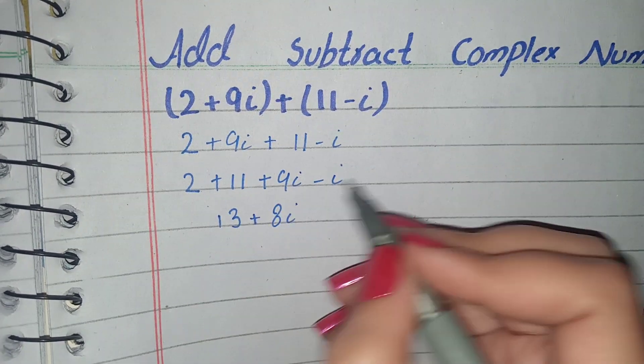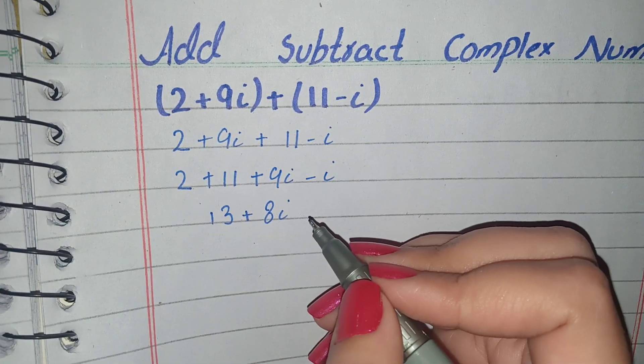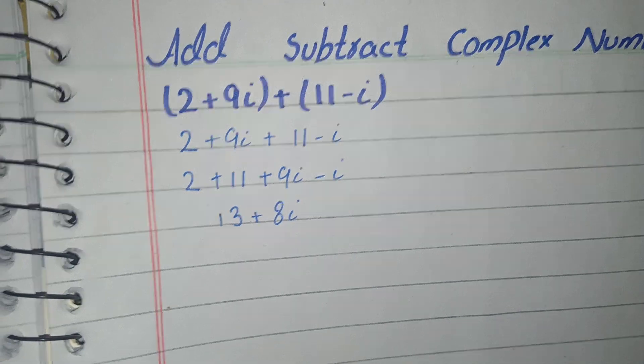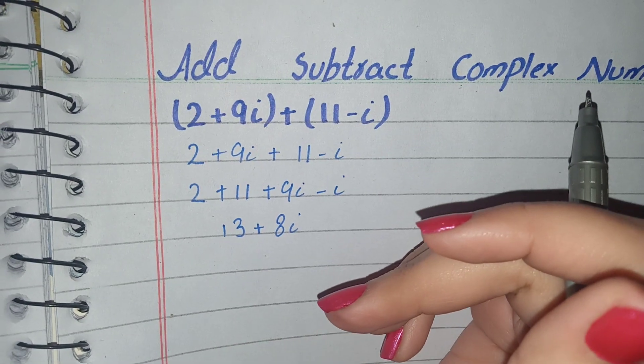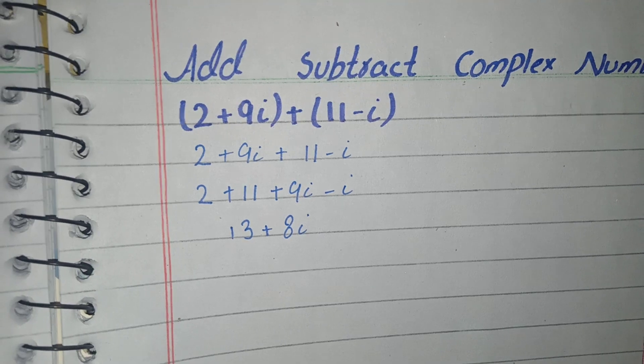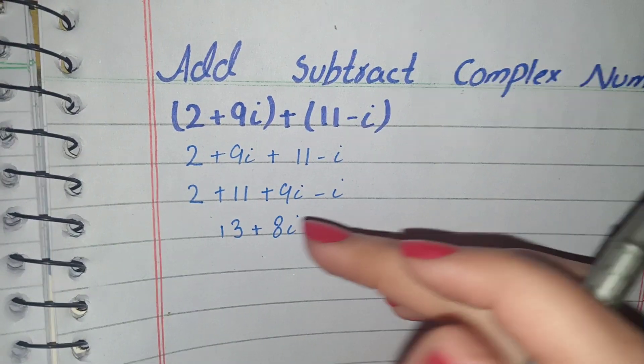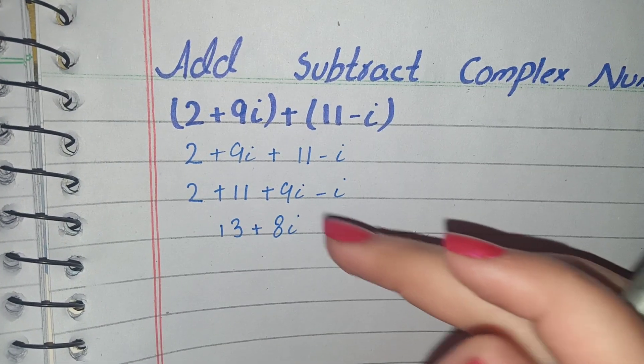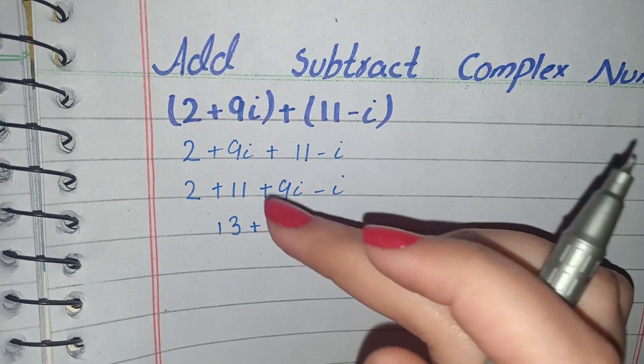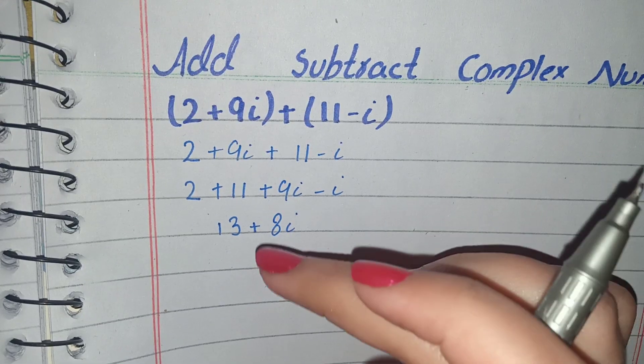The sign will be positive because from these two terms, the bigger term is 9i and the sign with 9i is positive, so we will write positive sign here.